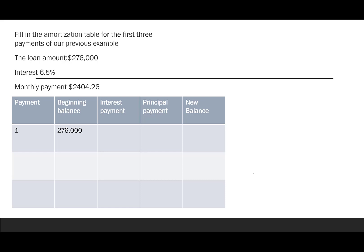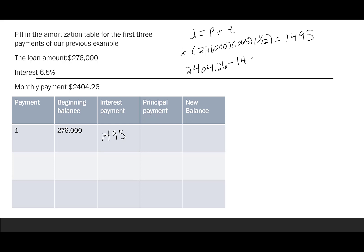Payment one: beginning balance is $276,000. Using I = PRT, interest = $276,000 × 0.065 × (1/12) = $1,495.00. Since the payment is $2,404.26 and $1,495 goes to interest, the remaining $909.26 goes toward principal. New balance: $276,000 − $909.26 = $275,090.74.